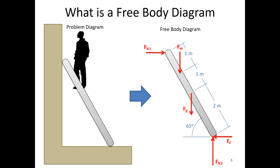Here is an example of a problem and a free body diagram. On the left we have a man standing on a ladder, with a rough surface at the bottom and smooth surface at the top. On the right is the free body diagram. We have separated everything that is not the body we're analyzing — just the ladder. We draw in all forces: normal forces, friction forces, gravity force, and Fn, the force of the man pushing down on the ladder. We also include key dimensions, lengths, and the angle.